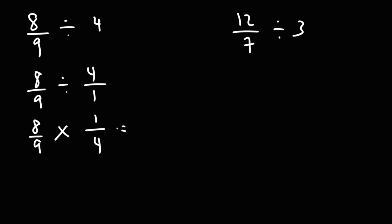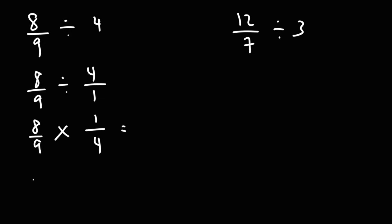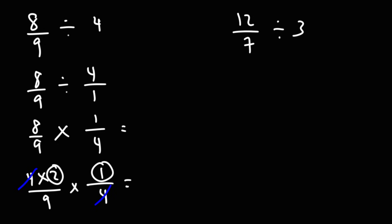Now, for this one, notice that 8 is divisible by 4. So what I'm going to do is write 8 as 4 times 2. I'll leave the 9 the same. Notice that the 4s can cancel. So what I have left over is 2 times 1, which is 2. And I only have a 9 on the bottom, so the answer is going to be 2 over 9 as a reduced fraction.